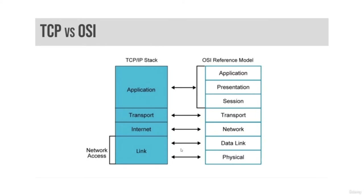The host-to-host transport layer, more commonly called simply the transport layer, connects the internet layer to the application layer. It is where applications are addressed on a network via ports. TCP and UDP are the two transport layer protocols used in TCP/IP.